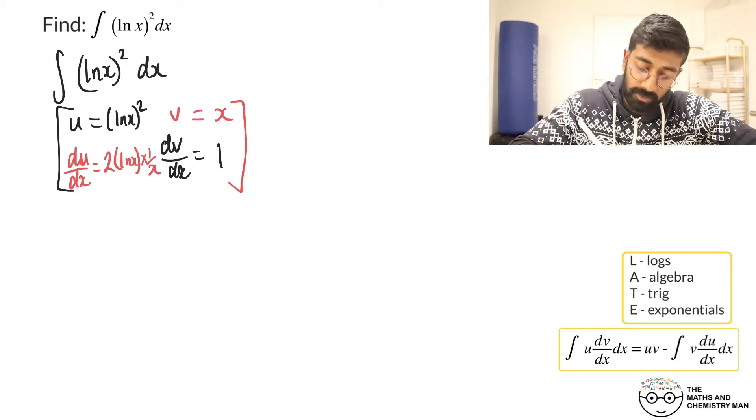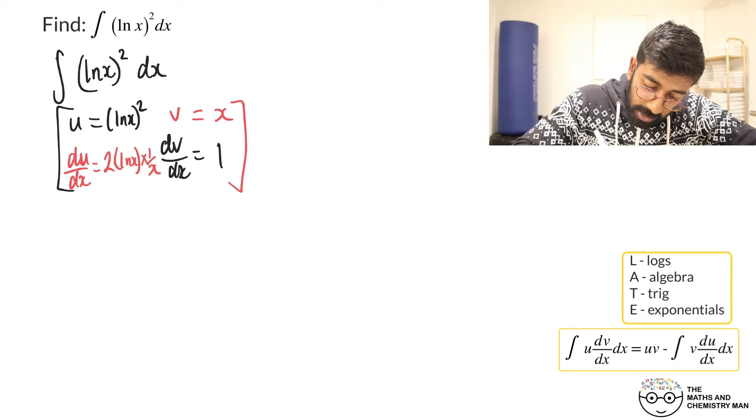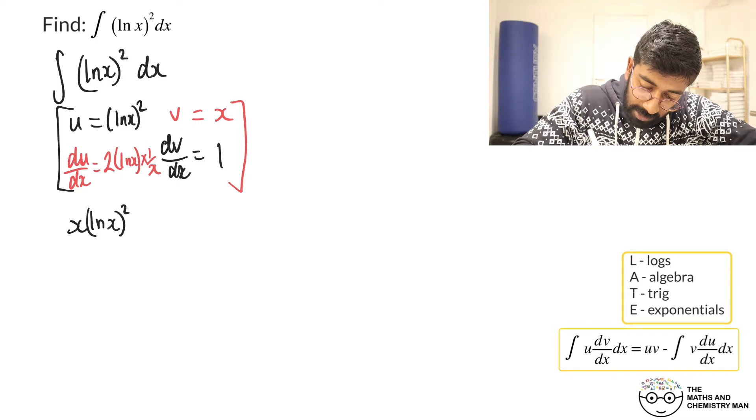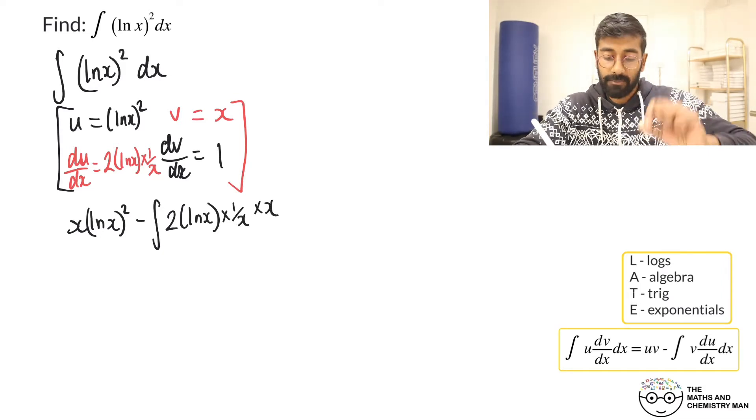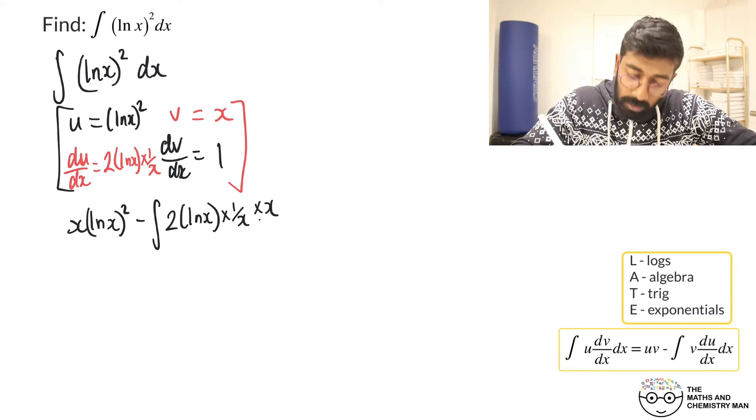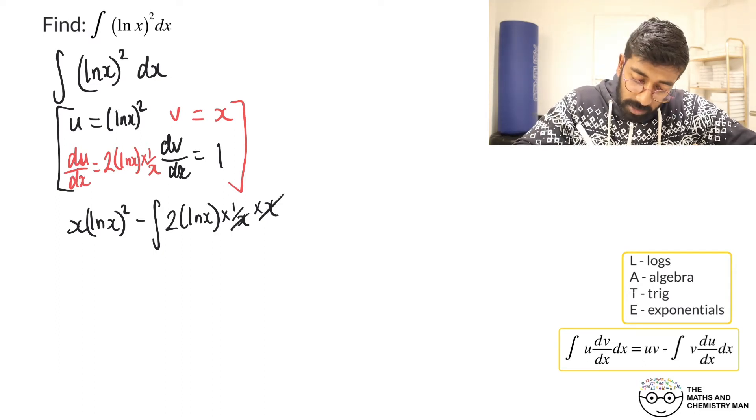Close that off and now we can apply our by parts formula. So that's uv, that's going to be x ln(x) squared subtract the integral of v du/dx. That's 2ln(x) multiplied by 1/x multiplied by x. Now what can you see there? You'll have some cancelling going on and we can get rid of those.